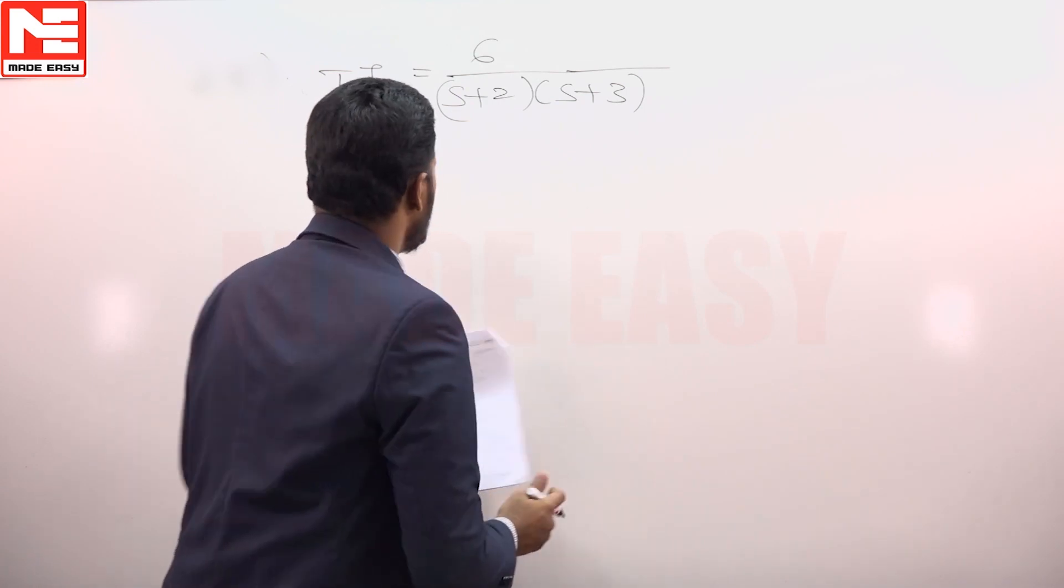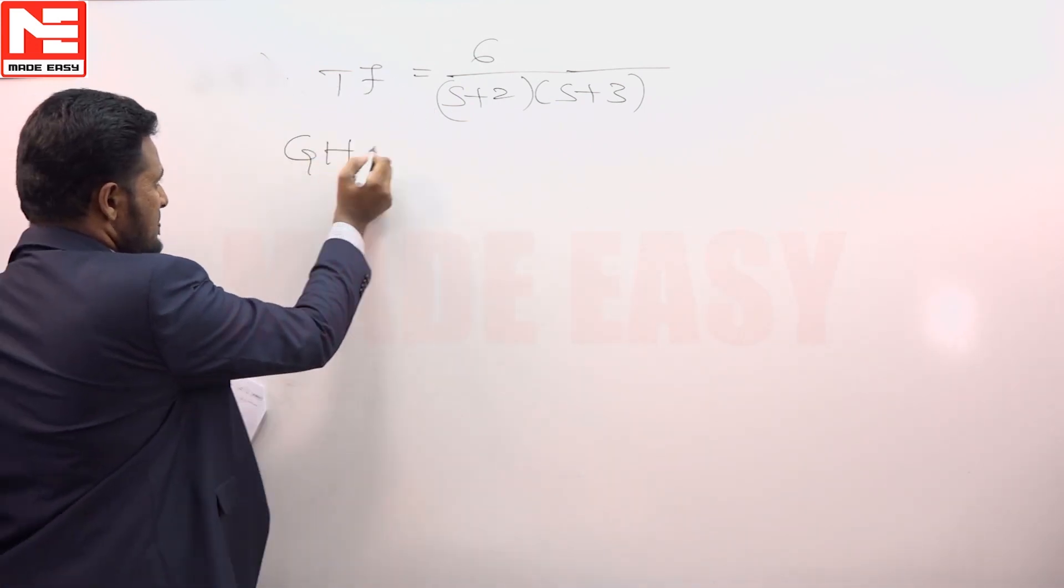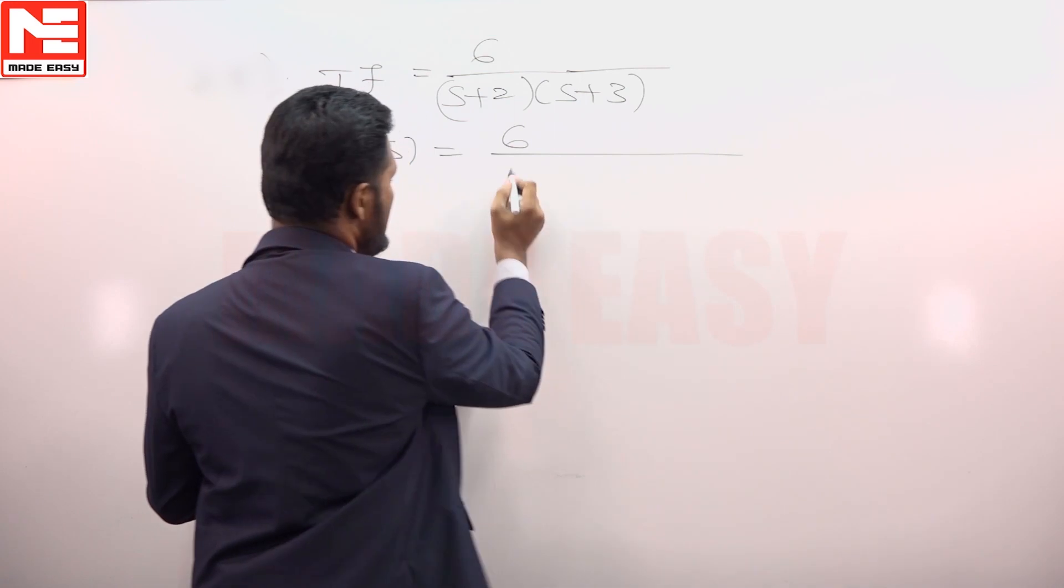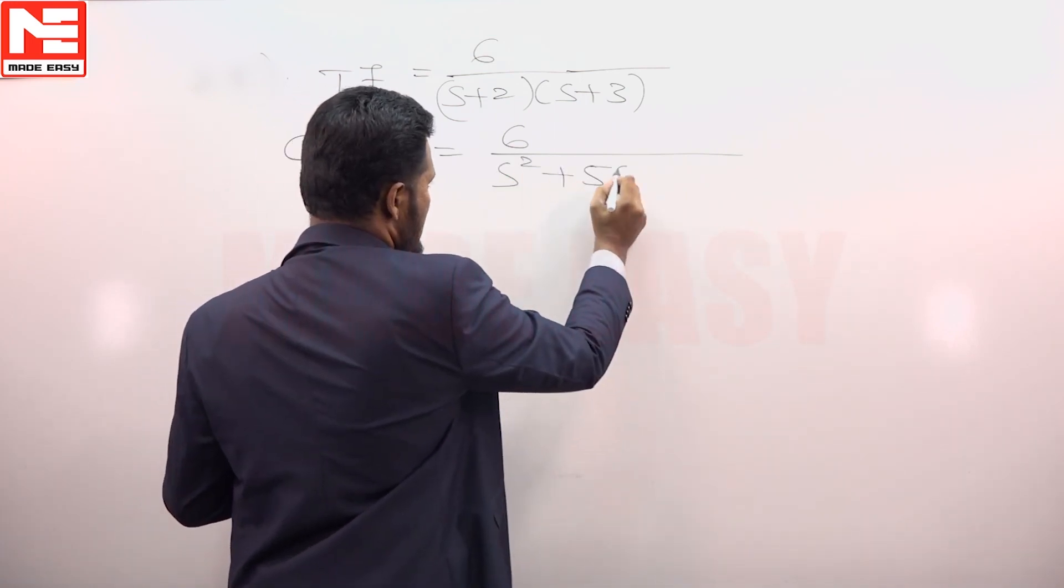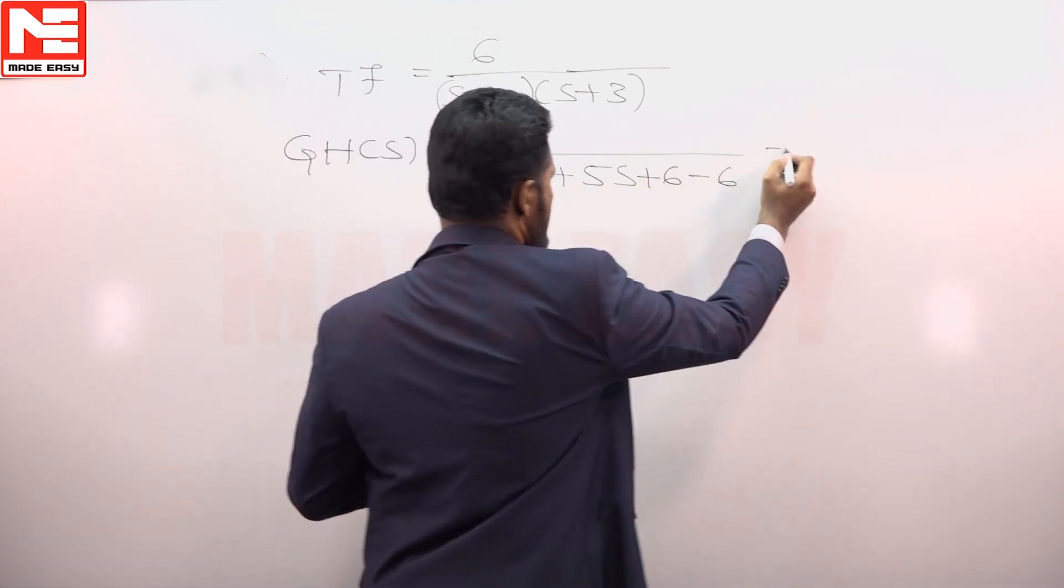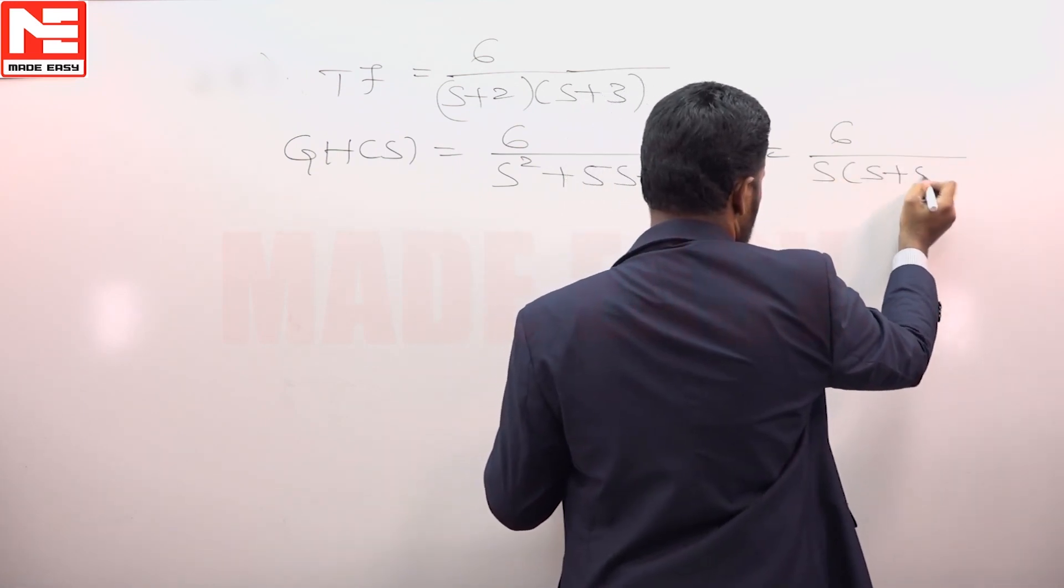So first we need to form the open loop transfer function of the system which can be formed as 6 upon s square plus 5s plus 6 minus 6, that is 6 upon s times s plus 5.